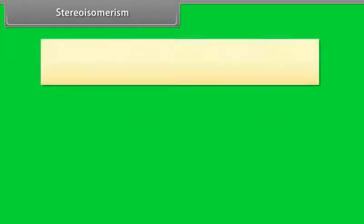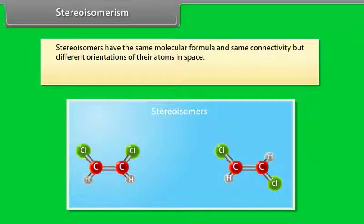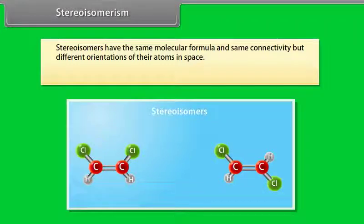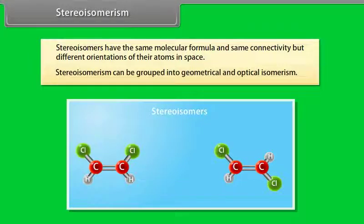Stereo-isomers have the same molecular formula and same connectivity but different orientations of their atoms in space. Stereo-isomerism can be grouped into geometrical and optical-isomerism.